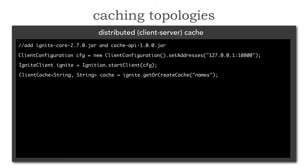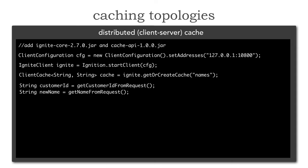Now I can say getOrCreateCache and provide the named cache, which is 'names' — that's going to hold all of the customer names. This gives me what's called a client cache within Ignite, where the first string in that map contains the customer ID and the second one the name. To retrieve something, I get the customer ID from the incoming request because what I want to do is get the name of that customer. I grab the customer ID as the key and also grab a new name to do both a retrieval and an update.